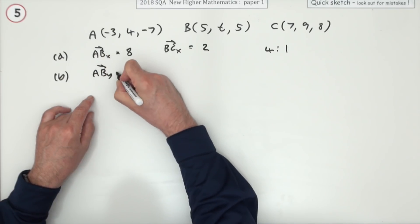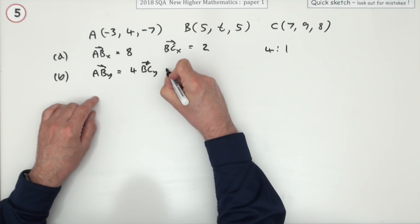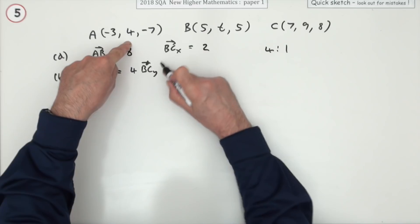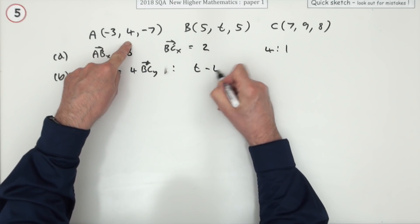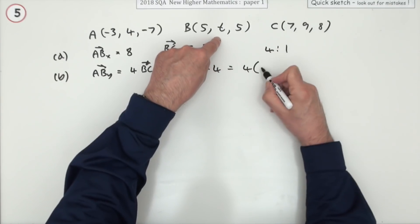AB_y should be four times BC_y. Now what's AB_y? Going from four to t is t minus four, and that should be four times nine minus t.